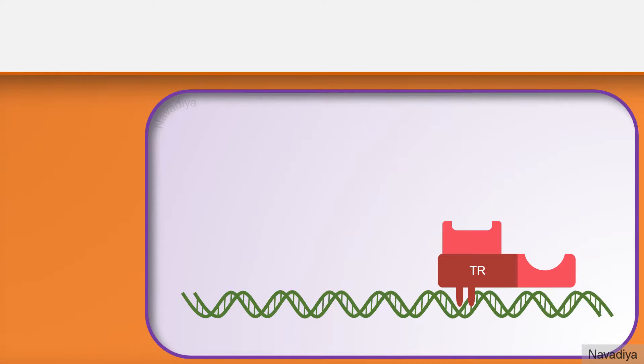Now without thyroid hormone, the thyroid hormone receptor forms a homodimer with another such thyroid hormone receptor. They are bound with a corepressor molecule which keeps gene expression suppressed.